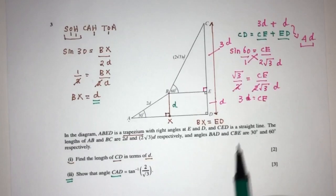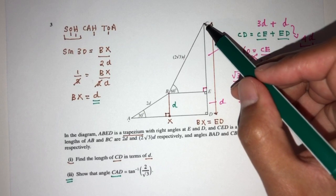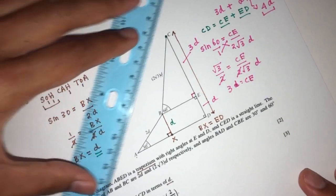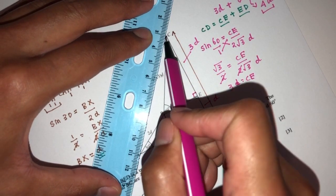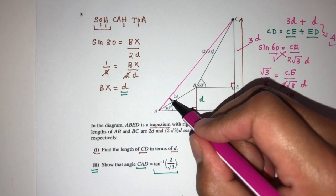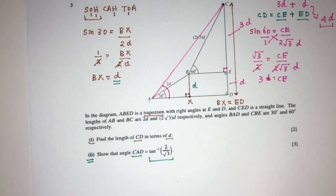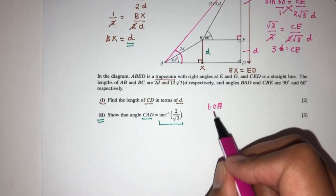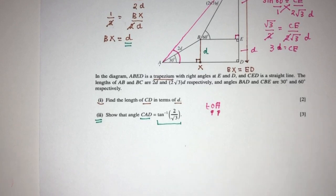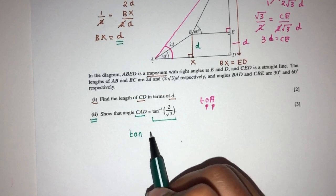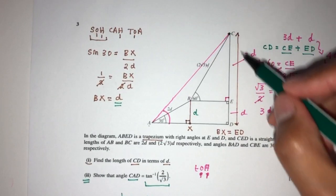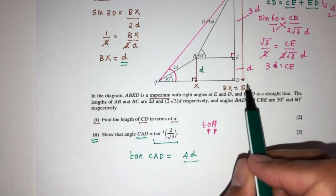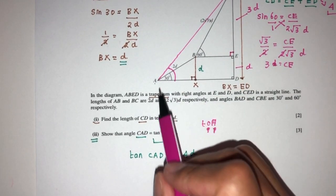Now let's move on to part two — we have to show the angle CAD. C is here, and AD is this side. Let's join C to A. This is the angle CAD that we don't know. Using tan, which is opposite over adjacent, tan of angle CAD equals the opposite side, which is 4D, divided by the adjacent side AD. We need to find the value of AD.